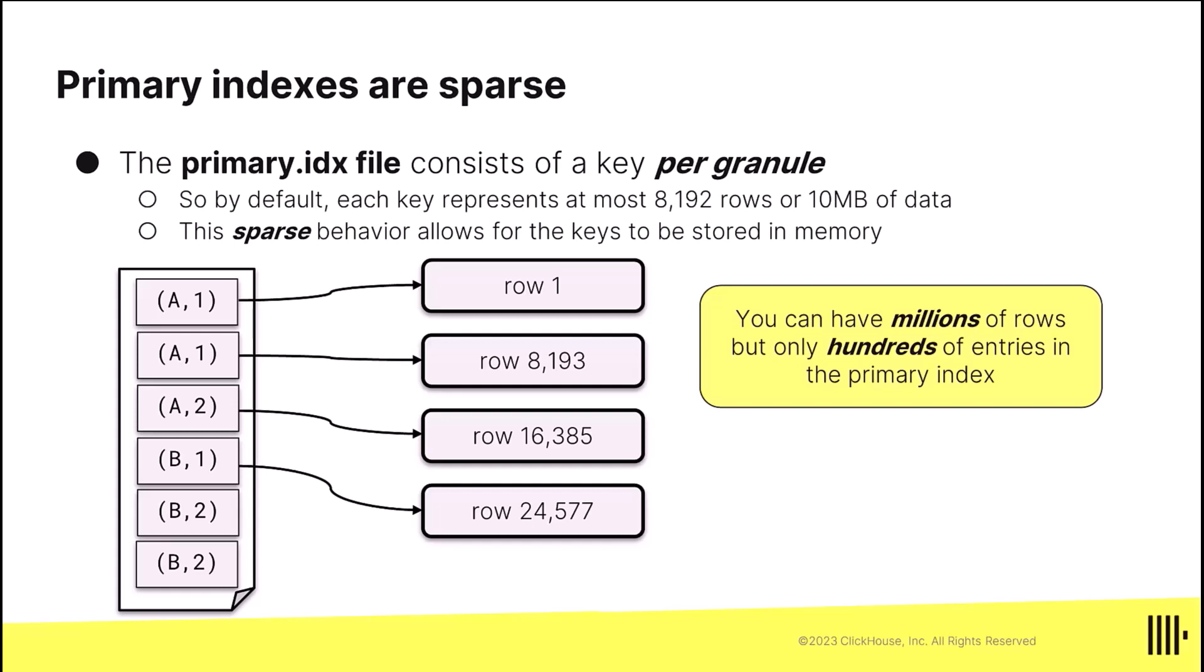Inside the primary index, like A1, if that's the first value of the primary key, that would point to row 1. Then the second value in the primary index is going to point to the 8,193rd row. Whatever the primary key of that row is, looks like here in this diagram it's A1 also. Then it looks like the third granule starts with 16,385. That must be A2—that is the third granule, and so on. It's why we call the primary index sparse, because it's only one entry for every granule.